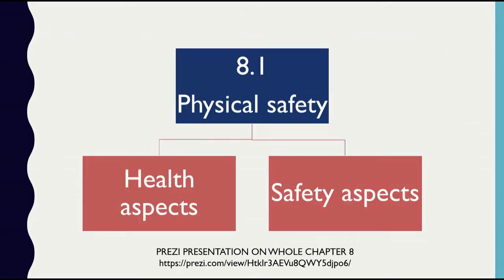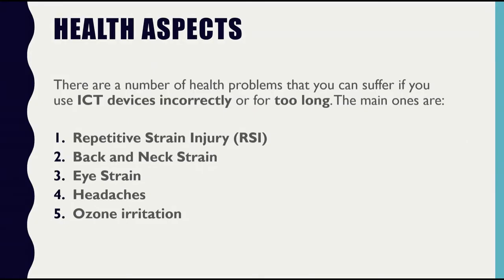Physical safety is actually divided into two things: the health aspects of safety and the safety aspects. You can find a Prezi presentation on this whole chapter in the link given here — I will not go through it now but you can use it as study material. Health aspect means the health problems that you can suffer if you use ICT devices incorrectly or for a very long time. The main ones are five: RSI, back and neck strain, eye strain, headaches, and ozone irritation.